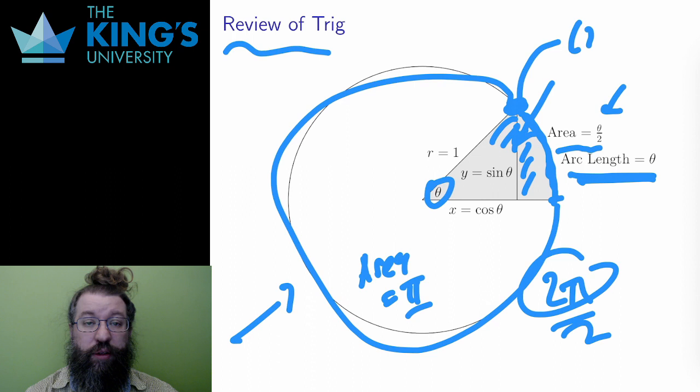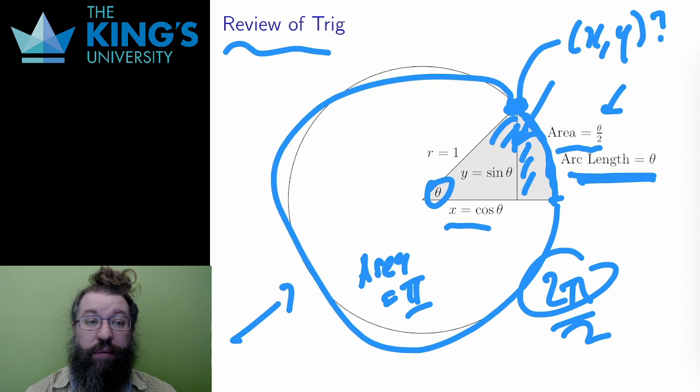Then, once I know the angle, I can ask for the x and y coordinates of a point on the circle. The x-coordinate is some function of the angle, and the y-coordinate is some other function of the angle. These are the trig functions by definition. Cosine is the x-coordinate of a point on the unit circle depending on angle, and sine is the y-coordinate likewise.